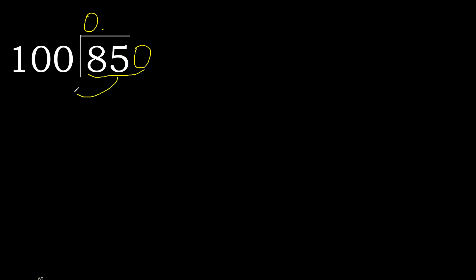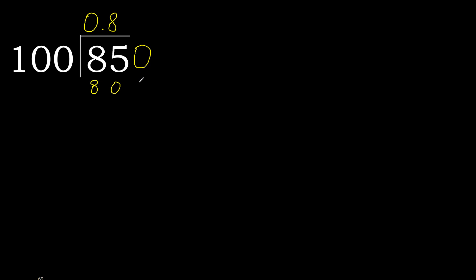850 is not less, therefore work with 850. 100 multiplied by which number is nearest to 850 but not greater? 100 multiplied by 9 gives 900, which is greater. Multiplied by 8 gives 800, which is not greater. Subtract, giving 50. Next. That is not a number, therefore always complete with 0. 0 point is here.